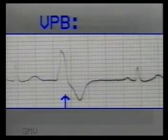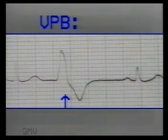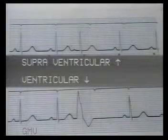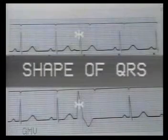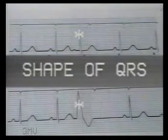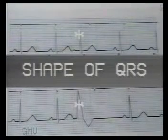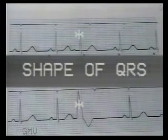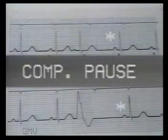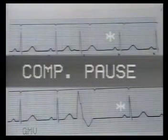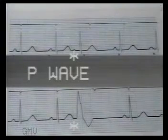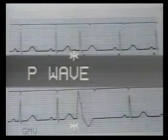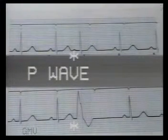Note the features of a ventricular premature beat: the QRS complex is wide and bizarre and the T-wave is opposite in direction to the main QRS complex. Now let us study the differences between ventricular and supraventricular or atrial premature beats. Number 1: the atrial premature beat has normal QRS configuration, while ventricular premature beats have wide and bizarre QRS complex. Number 2: atrial premature beats have an incomplete compensatory pause, whereas ventricular premature beats have a complete compensatory pause. Number 3: ventricular premature beats have no P-wave. A preceding P-wave is seen only in supraventricular premature beats, though it may not always be visible — it may be merged with the previous T-wave.